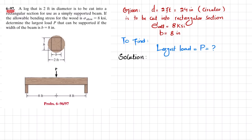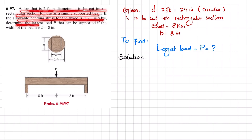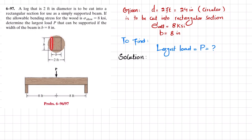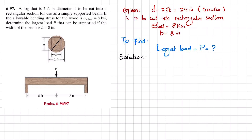Welcome back, problem 6-97. The statement is: a log that is two feet in diameter is to be cut into a rectangular section for use as a simply supported beam. If the allowable bending stress of the wood is 8 ksi, determine the largest load P that can be supported if the width of the beam is 8 inches. You can see this is a circular log with diameter equal to 2 feet that has to be cut into a rectangular section used as a simply supported beam.